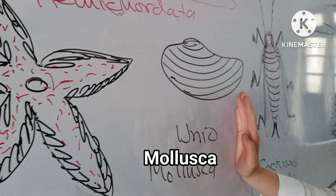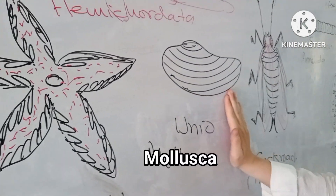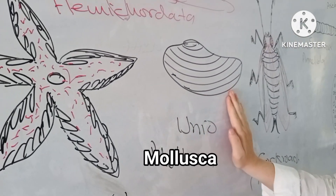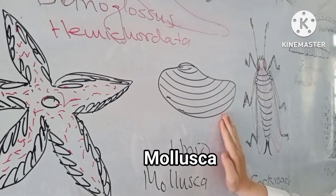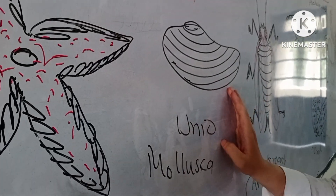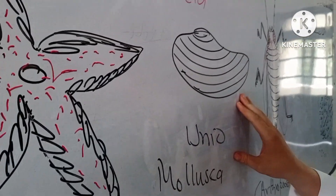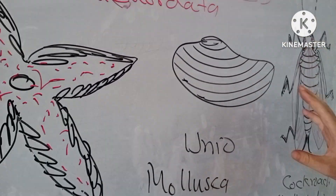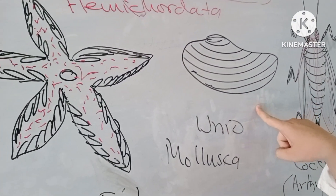This is Mollusca — specifically Unio. It is important because we study it in both classes, and it belongs to phylum Mollusca.